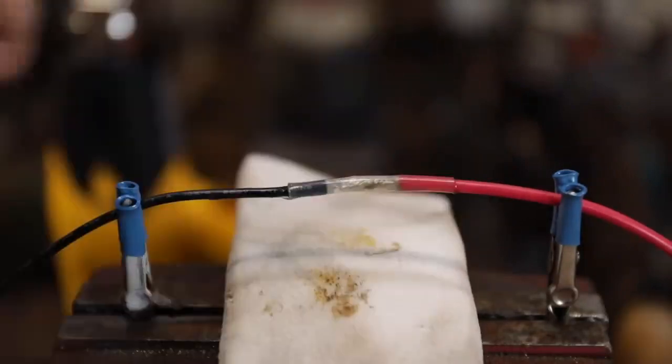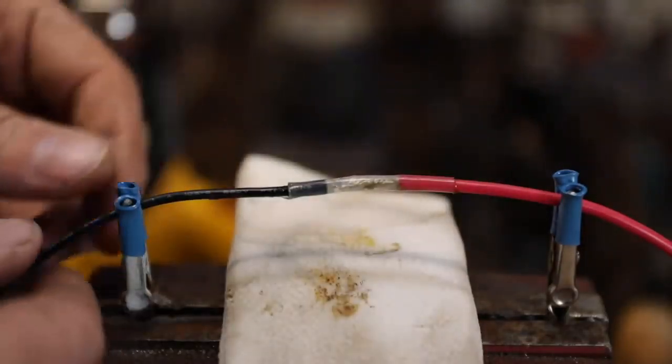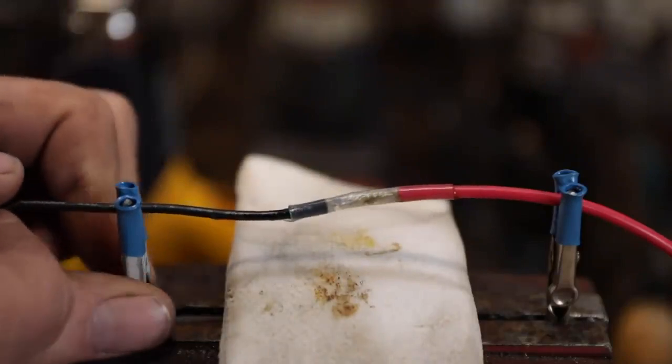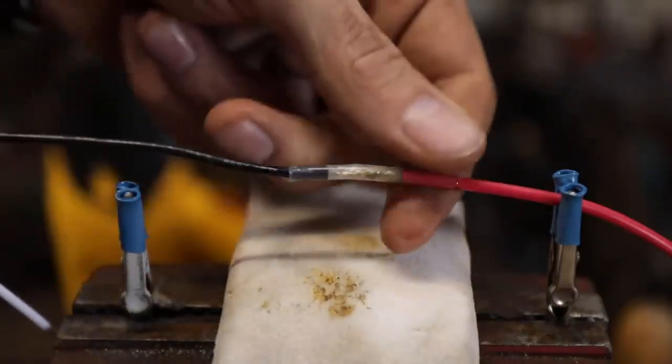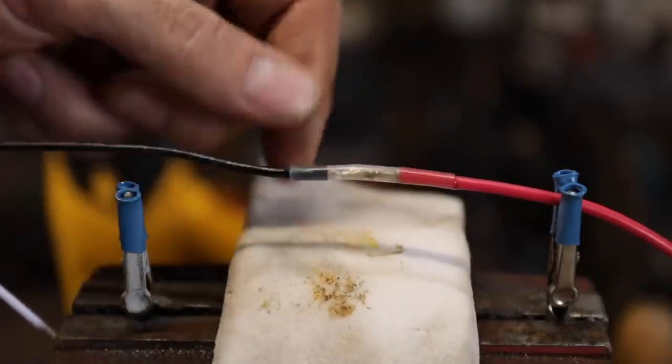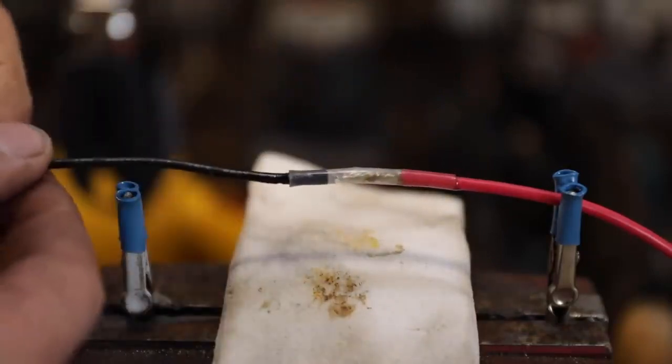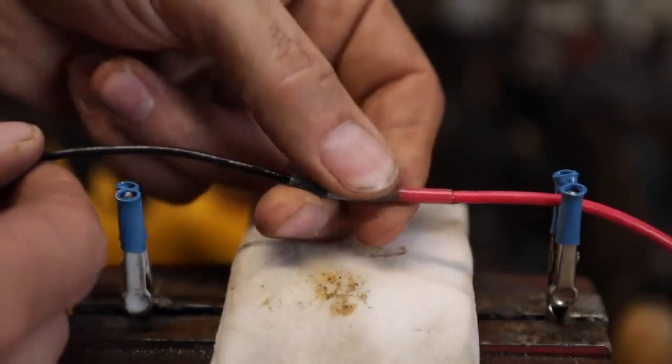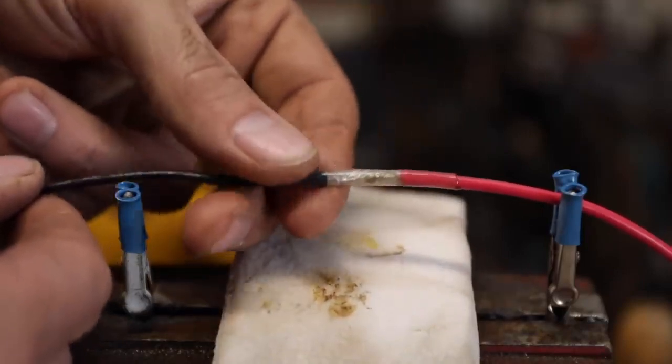Once that's cool to the touch, you can clean that silicone off there and you have a really good, as good as you're going to get, a waterproof connection for joining two wires together that's probably going to be tougher than the wire itself.